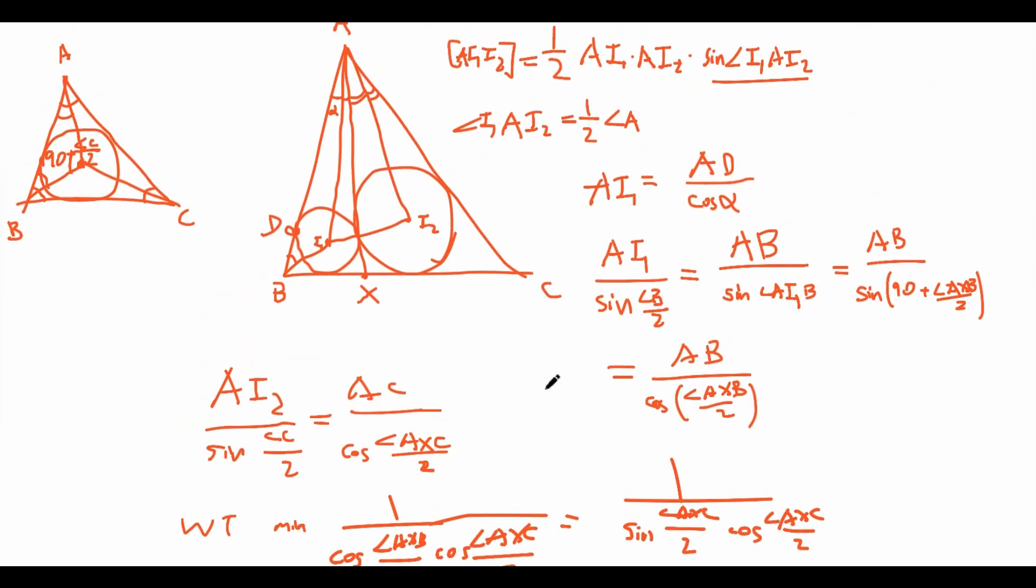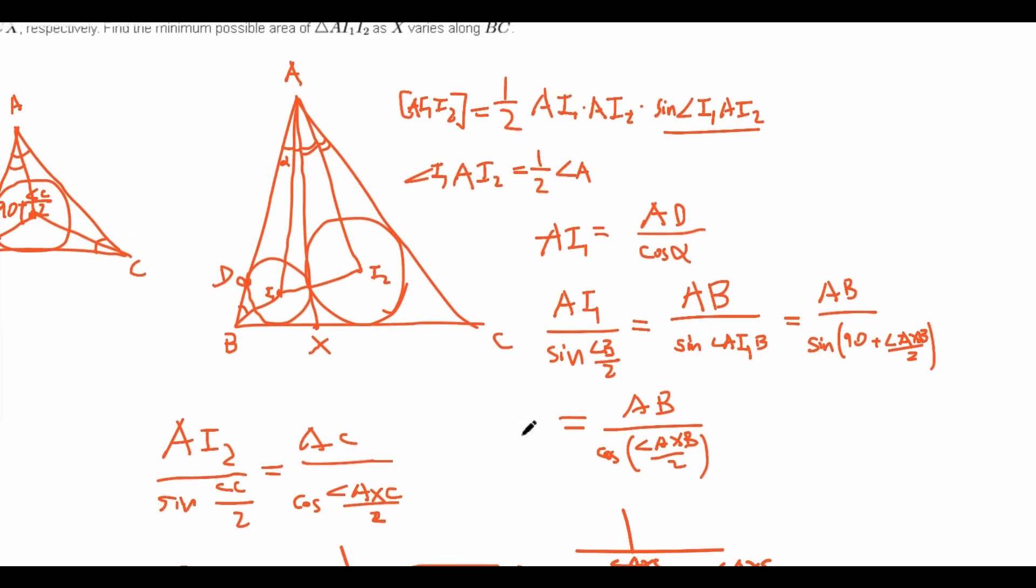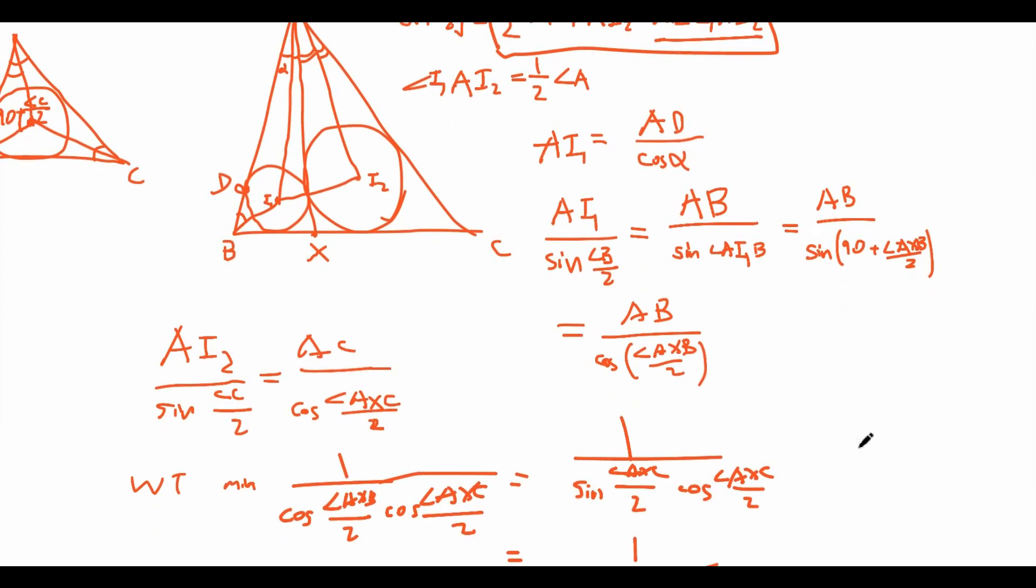So that just tells us that the area of the triangle AI1, I2 is maximized when AX is the altitude of triangle ABC. So now that we know that it is maximized at the altitude, all we need to do now is to plug in everything back into this expression, 1 half AI1, AI2, because everything that we set as fixed, we can actually calculate. And since there is quite a bit of calculation, I'm just going to leave that as an exercise to the viewer. However, you can go ahead and try to calculate the area AI1, AI2, given that AX is the altitude of triangle ABC.